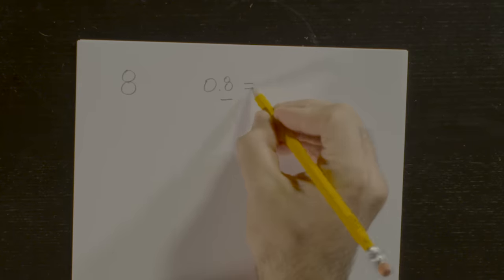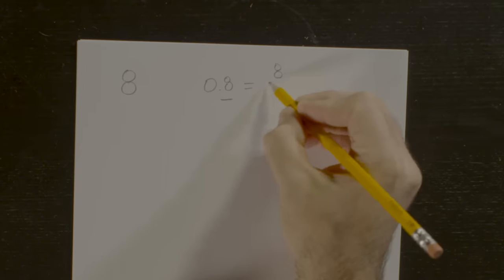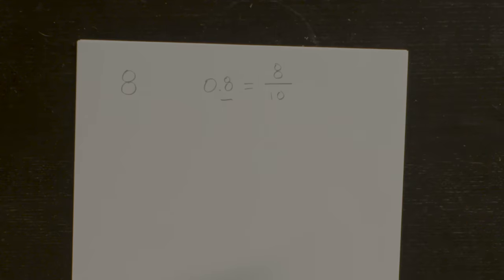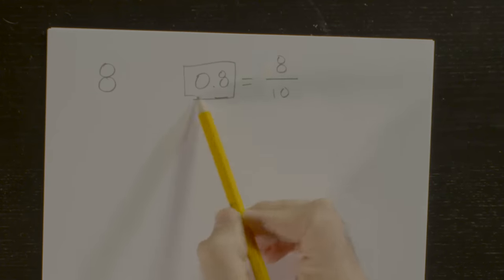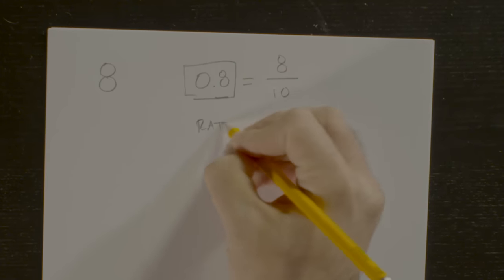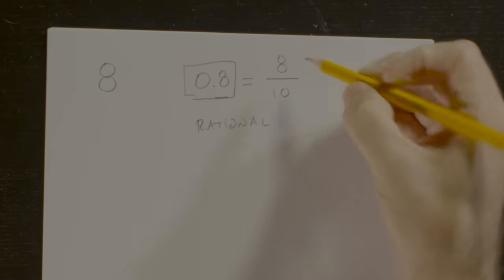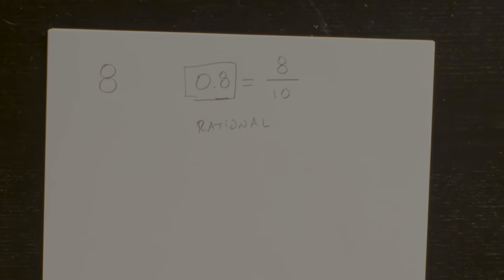Don't worry — 0.8 may not be an integer, but it is rational, which means it can be expressed as a ratio between two other integers. In this case, 0.8 is equal to 8 over 10, that is 8 divided by 10. 8 and 10 are clearly both integers, which means that since 0.8 is equal to them, it is at least rational — it can be expressed as a ratio between two integers.